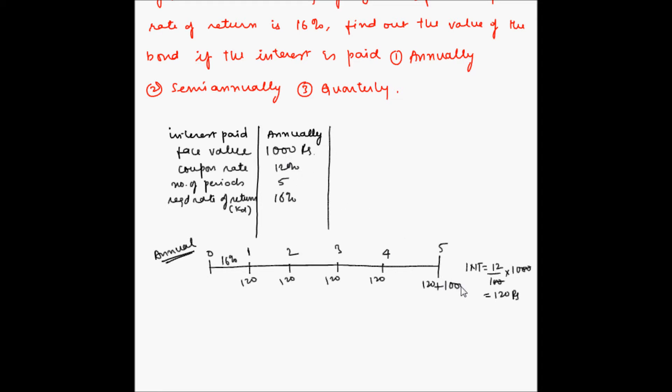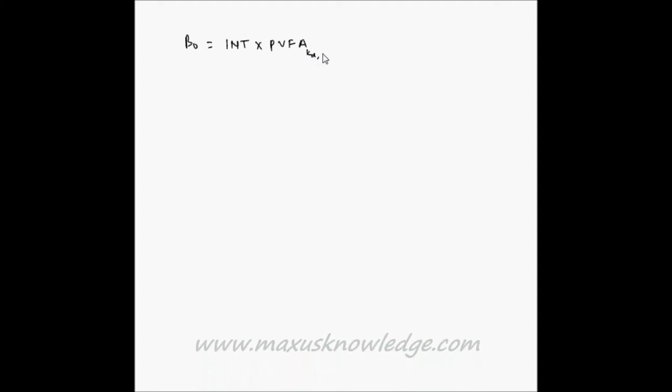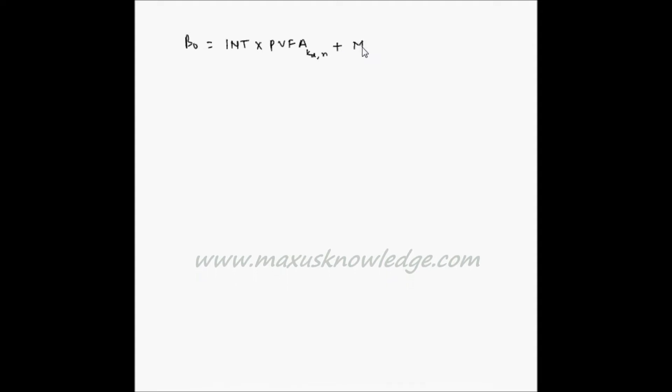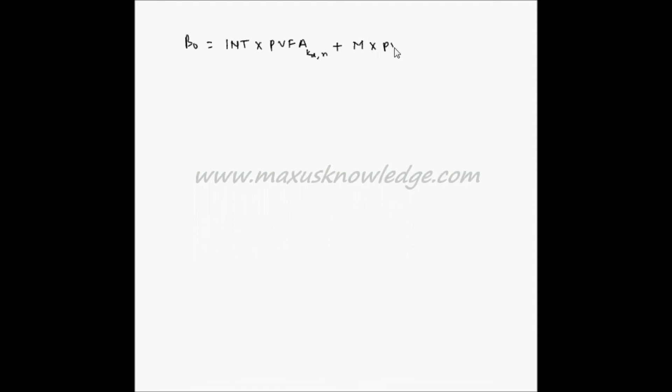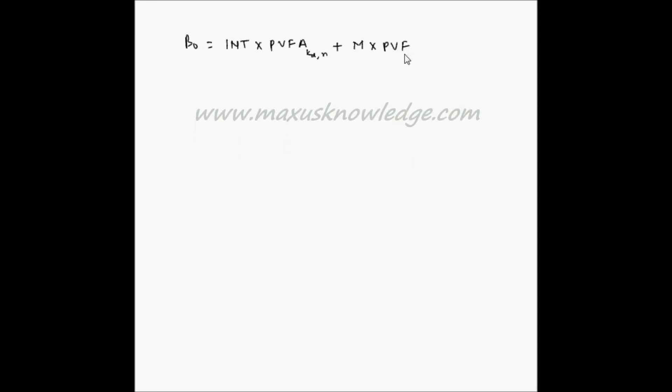At each period we receive 120 rupees, and at the end we also get the maturity value of 1000 rupees. I'm going to solve this problem using the present value factor tables. The value of the bond is equal to interest multiplied by the present value factor of annuity — where interest rate is KD and tenure is N — plus M, the maturity value, multiplied by the present value factor of a lump sum where interest rate is KD and number of periods is N.